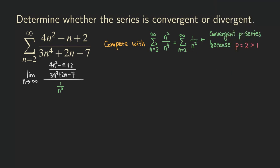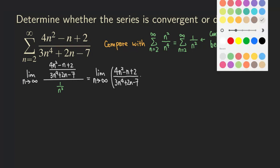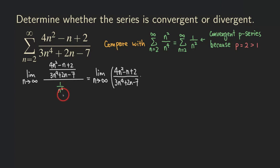To compute this limit, we are going to write the large quotient as a product so that we don't have a complex fraction anymore. So we get four n squared minus n plus two, all over three n to the fourth plus two n minus seven, and then all that is multiplied by the reciprocal of one over n squared, which gives us n squared over one.